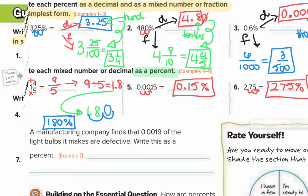Number seven. A manufacturing company finds that 0.0019 of the light bulbs it makes are defective. Write this as a percent. This number is a decimal and we want to get a percent. Again, decimal to percent is two to the right. So it's going to end up in front of the nineteen - that's 0.19 percent.